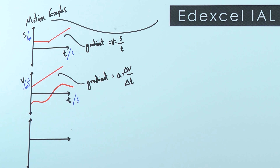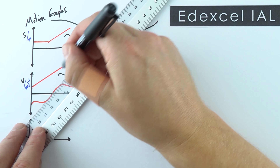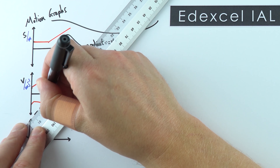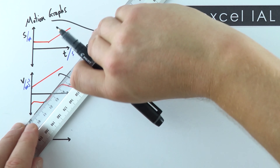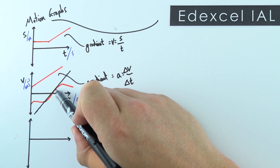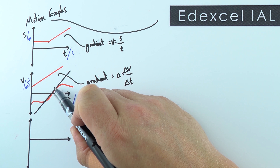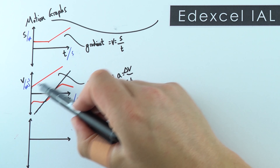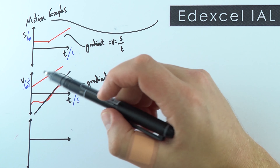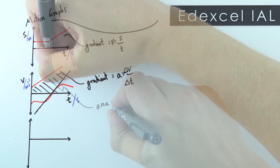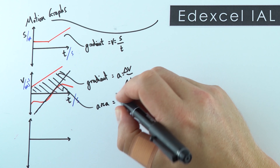If you want to find the acceleration at any particular point on a curved velocity-time graph, what you do is draw a tangent to the line at that point. You then work out the gradient of this tangent line to find the instantaneous acceleration at that point. The other important thing about a velocity-time graph is that the area between the line and the axis actually means something — the area of the graph, shaded in, is equal to the displacement of the object.